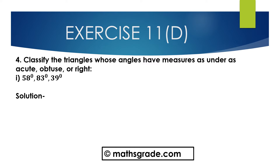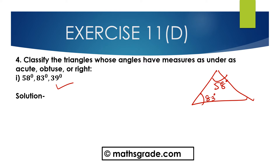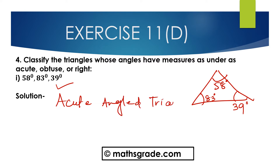First part: 58 degrees, 83 degrees, and 39 degrees. In this triangle, all three angles are more than 0 degrees but less than 90 degrees — 58 degrees, 83 degrees, and 39 degrees. We know any triangle whose angles are more than 0 degrees but less than 90 degrees is said to be an acute angle triangle. So this is an acute angle triangle.